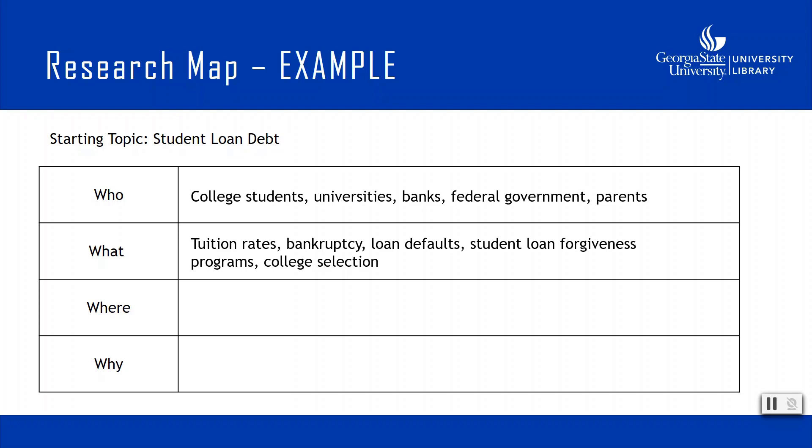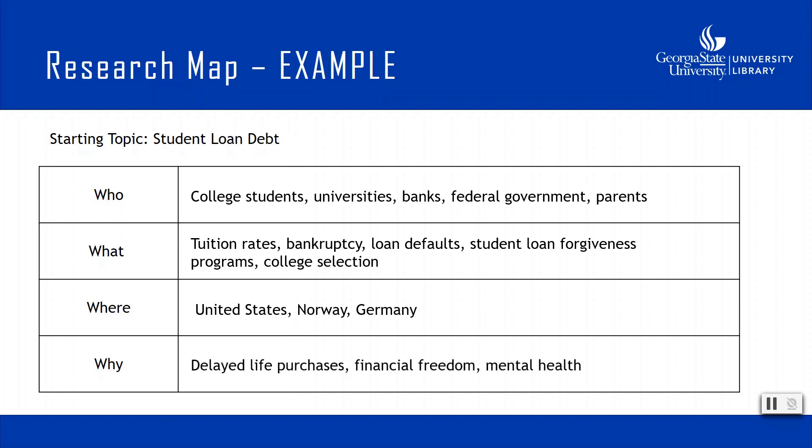For 'where,' you could focus on just the United States, or possibly compare the U.S. to countries that provide free college, such as Norway or Germany. And finally, 'why' — why do we want to learn more about this topic? Some ideas include the impact student loan debt has on creating delayed life purchases for graduates, like home buying, retirement, or starting a business. There's also financial freedom or mental health.